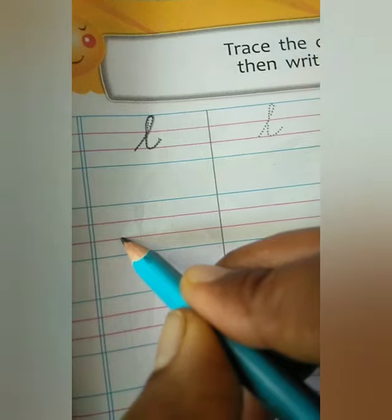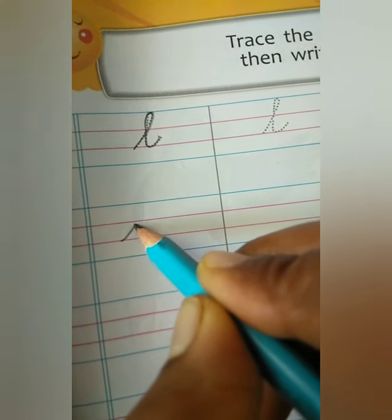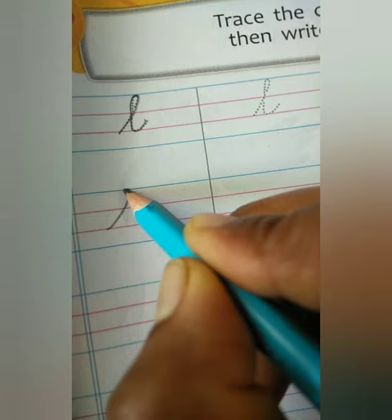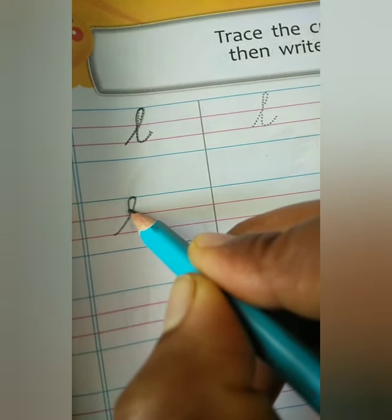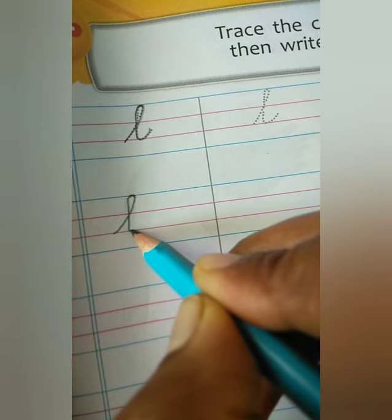Start from red line, go to upside, then touch to blue line, then left side, curve, then downside, then right side, curve.